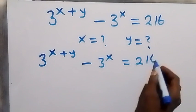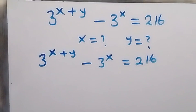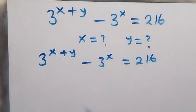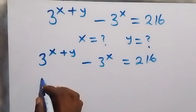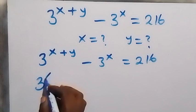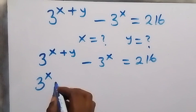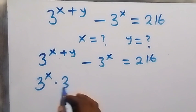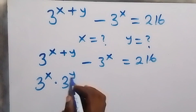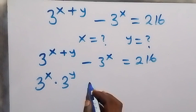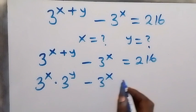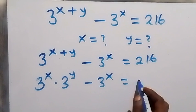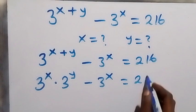From the law of indices, we can write 3 raised to power (x + y) as 3 raised to power x times 3 raised to power y. So the equation becomes: 3 raised to power x times 3 raised to power y, minus 3 raised to power x, equals 216.